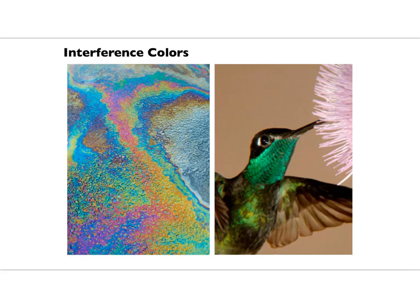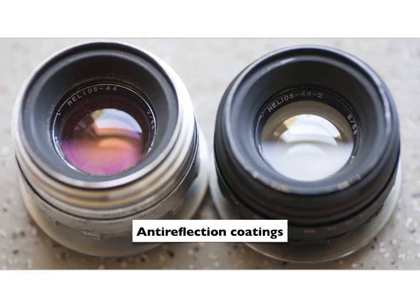Interference colors — you've seen them before, like pictures of an oil slick on a road surface. You get a thin film of oil and you get those colors. But it's also responsible for the colors in hummingbirds and other places in nature. It's also responsible for anti-reflection coatings. If you look at two lenses — this one with no coating shows significant reflection, while this one has a coating that reduces the reflection, but it also has a certain color associated with it. You can minimize reflection, but if you minimize it at one wavelength, you can't minimize it at other wavelengths. You just have to pick one.